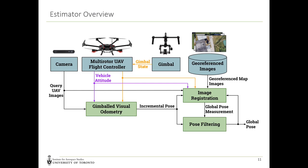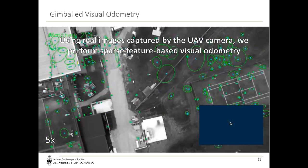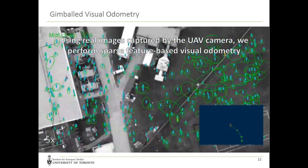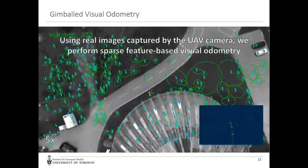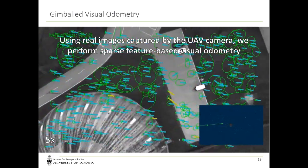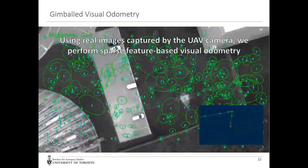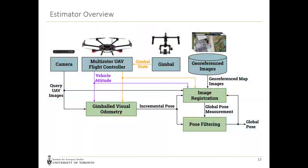The first step in our estimator is to perform visual odometry on the real images. Here's an example of our sparse feature-based gimbaled visual odometry, showing grayscale images with SURF feature tracks, and a visualization of the vehicle and keyframes. The output of visual odometry is a relative six degree of freedom pose between two keyframes, which provides both an initial guess for image registration and a prior in our filter.